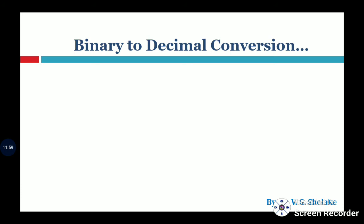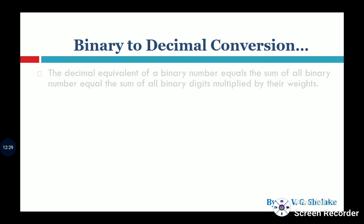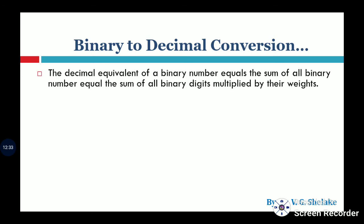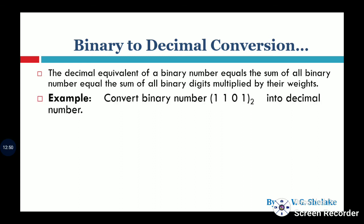We have discussed what radix means: it is the number of symbols used in a number system. We discussed binary, octal, hexadecimal, and decimal number systems. Now we will discuss how to convert from one number system to another — specifically how to convert a binary number into its equivalent decimal number. For example, 1101 in binary needs to be converted to decimal.